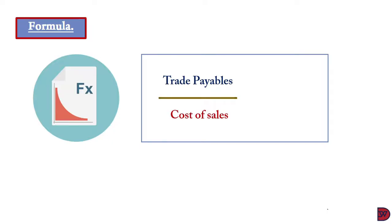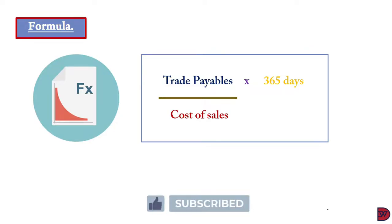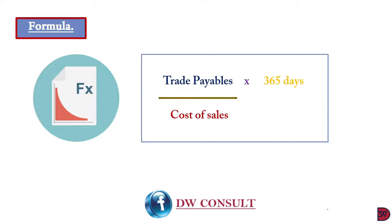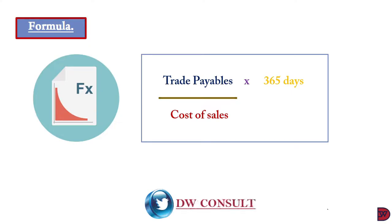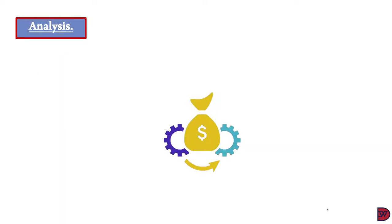The formula for trade payables payment period is: trade payables divided by cost of sales, multiplied by 365 days, to estimate it over a year. Trade payables are found in the current liabilities section of the balance sheet — go into the notes to find the specific trade payables figure. Cost of sales is found in the profit or loss account; for service companies, direct expenses may be used instead.